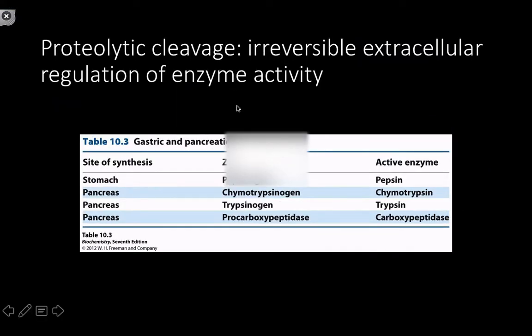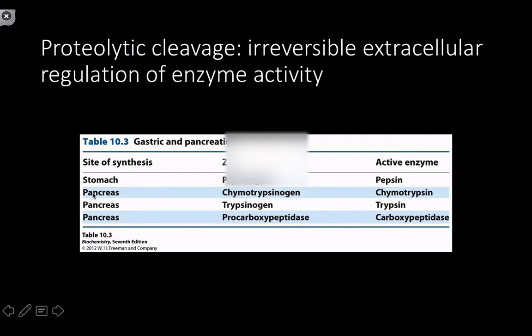For intracellular enzymatic activity, we have a lot of advantages. We can put phosphate molecules on and take them off. We have compartmentalization and relative consistency within the cell that give us more leeway. For the extracellular environment, much of what we have to work with is basically not there — it's a chaotic environment that varies depending on the specific cell type. So proteolytic cleavage is to extracellular enzymatic regulation what phosphorylation is to intracellular enzymatic regulation.